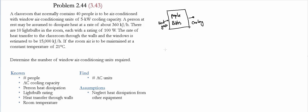We start with the rate of net transfer, which equals the rate of energy going in minus the rate of energy out, and that equals the change of energy in the system. Because we're treating this problem as steady state, the change in energy is zero. Therefore, the rate of energy in equals the rate of energy leaving the system. Energy in comes from the people, the bulbs, and heat transferred through the walls and windows. What leaves is the cooling process.